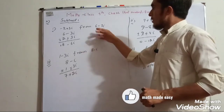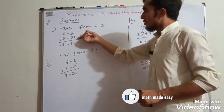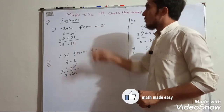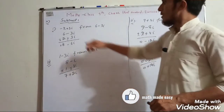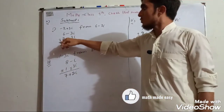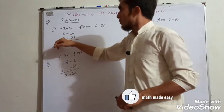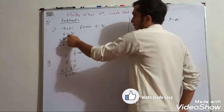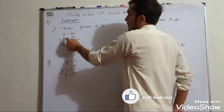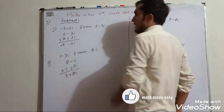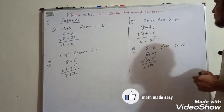We write the first number 6 minus 3 iota and the second number minus 2 plus 3 iota. So 6 plus 2 is 8, and minus 3 iota minus 3 iota gives minus 6 iota. The result is 8 minus 6 iota.